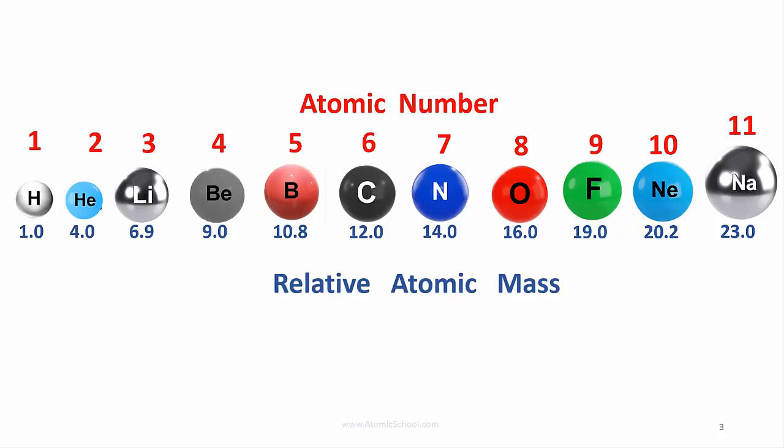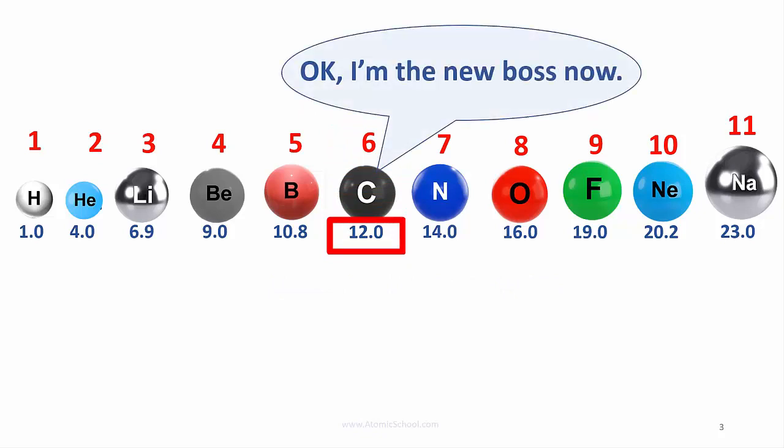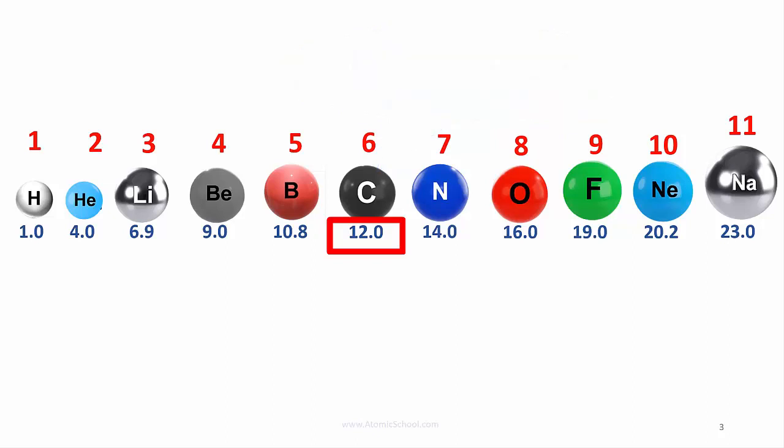Later, scientists found they could weigh a carbon atom more accurately than a hydrogen atom in the lab. So they made its mass equal to 12, and started comparing all the other masses to that instead. But it's already 12, so hydrogen stays equal to 1, to keep them in proportion. That means all the other atoms stay the same too. Comparing carbon as 12 is much the same as comparing hydrogen as 1. No change really.